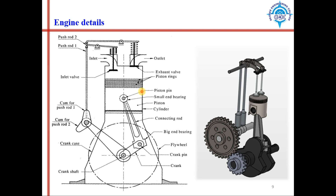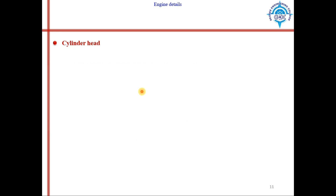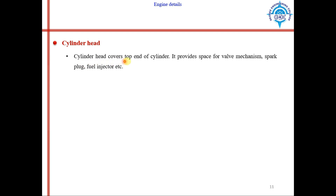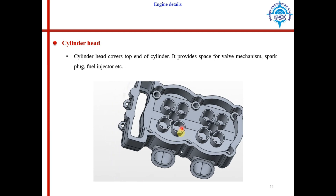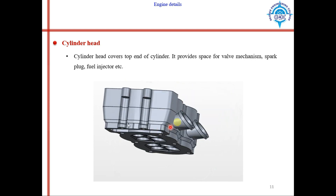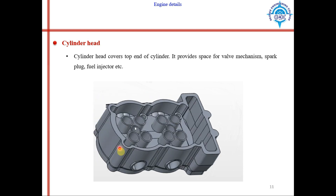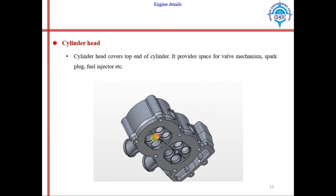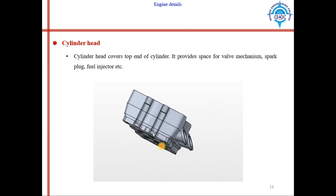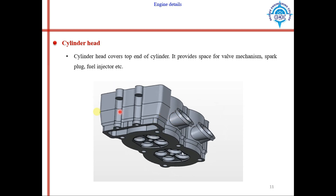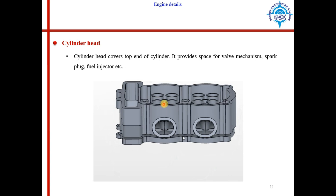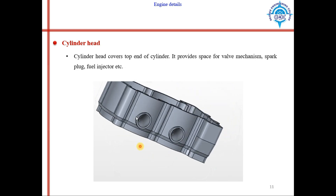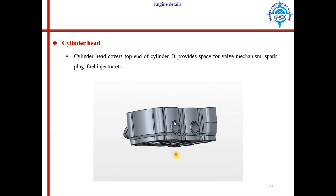Next is the cylinder head. The cylinder head covers the top end of the cylinder and provides space for valve mechanisms, spark plug, and fuel injector. The figure shown is a cylinder head of a heavy automobile. Four ports are visible — exhaust ports and inlet ports for fuel and exhaust gases. The hole in the middle is provided for the spark plug in spark ignition engines, and for the fuel injector in diesel engines.